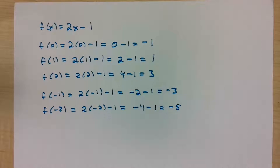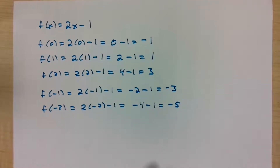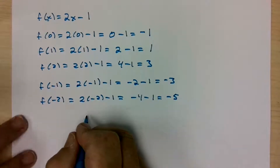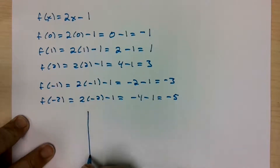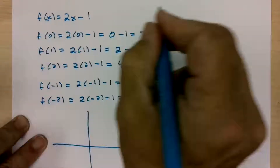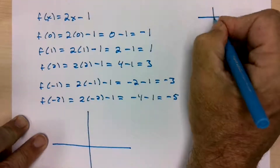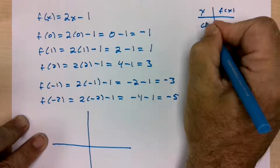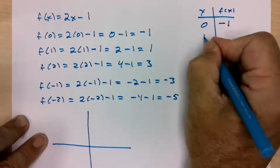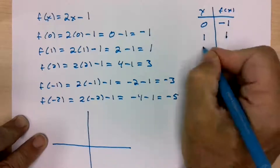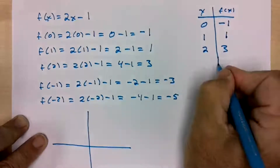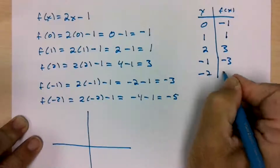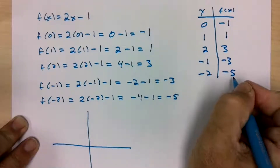So we have all of these points. Can we graph them and get a decent graph that represents these? Our points form an x and f of x table — sort of like an xy table. Input 0, output negative 1. Input 1, output 1. Input 2, output 3. Input negative 1, output negative 3. Input negative 2, output negative 5.